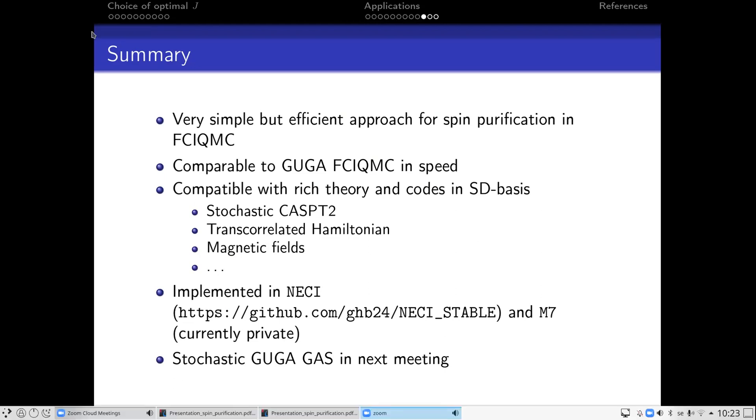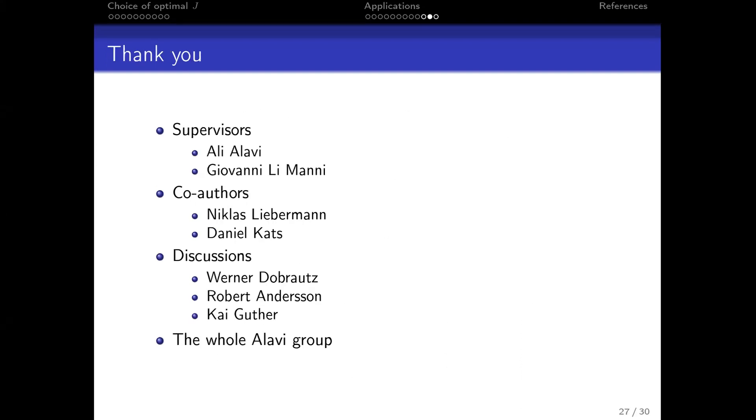I can close and want to emphasize that yes, it's a very simple approach, but it's extremely efficient because FCIQMC benefits from sparsity and the spin operator is highly reference but sparse. We have a very efficient approach for spin purification in FCIQMC. It's comparable to Guga FCIQMC depending on system. We have rich code and theory already available, and it's implemented in M7, which is a new C++ code in our group. Thank you very much.